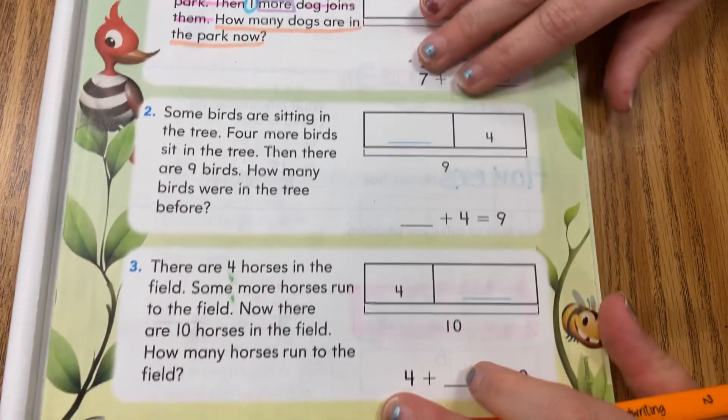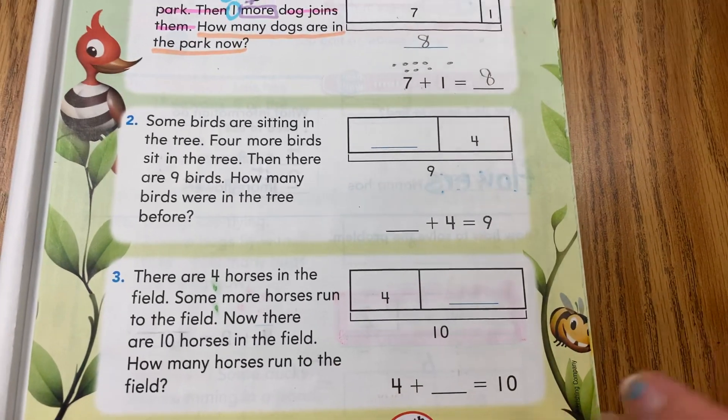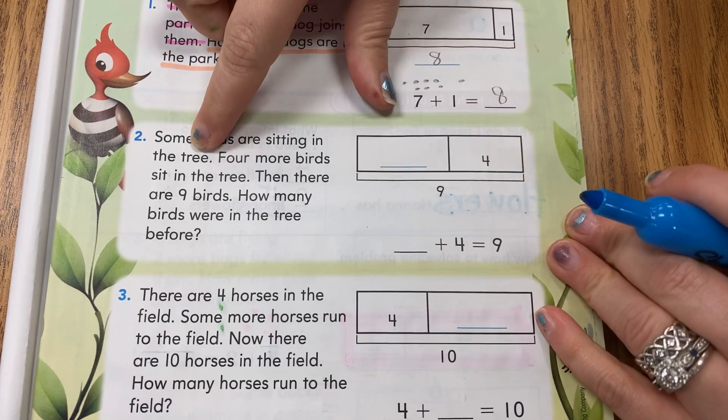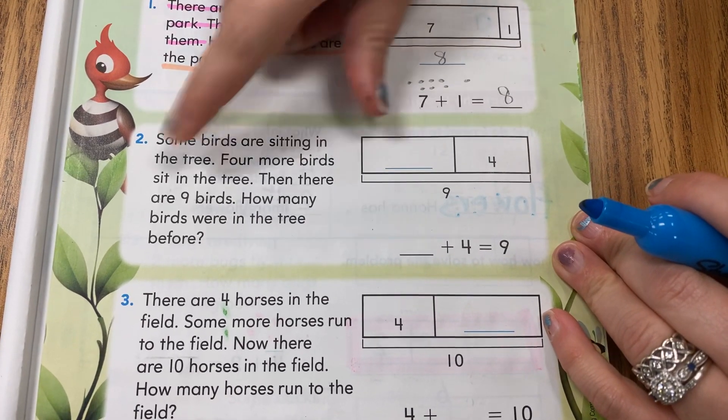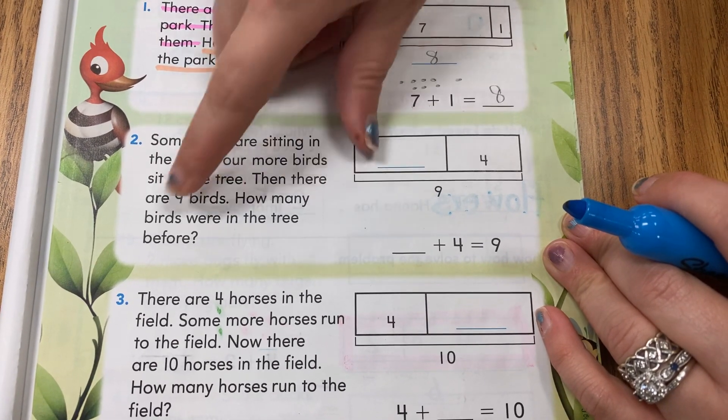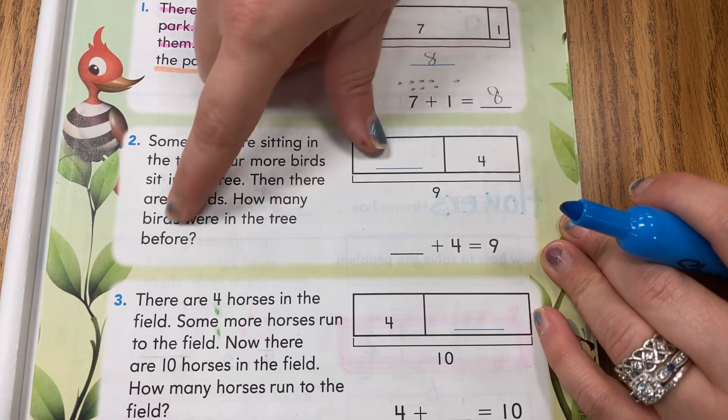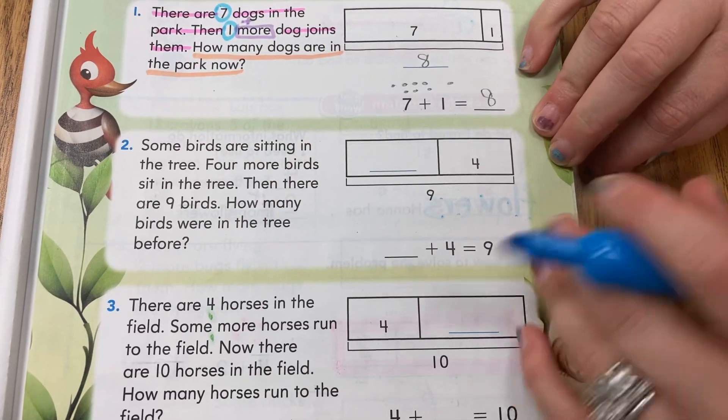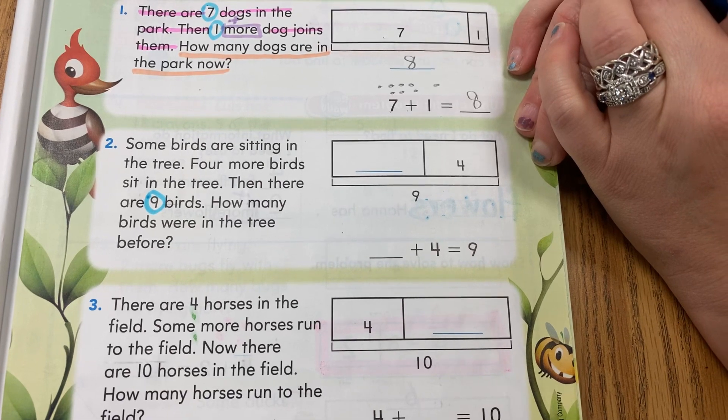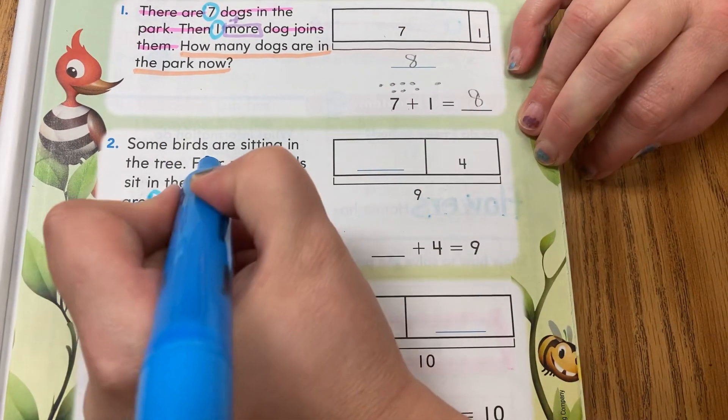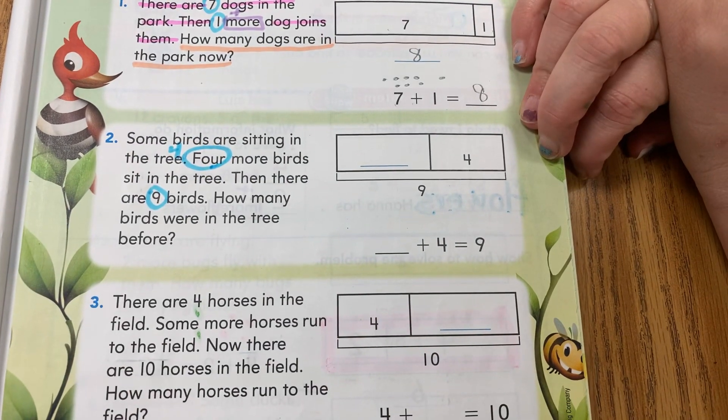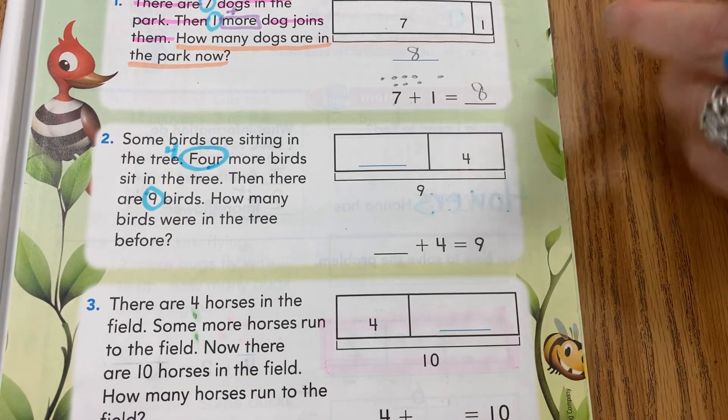Moving it up here, I have seven plus one more is the same as eight. Sliding down another one, my friends. Here we go, starting with blue. Some birds are sitting in the tree. Four more birds sit in the tree. Then there are nine birds. How many birds were in the tree before? Now I see the number nine, but I don't see another number. It's there, but they wrote it in words. This is the number four.